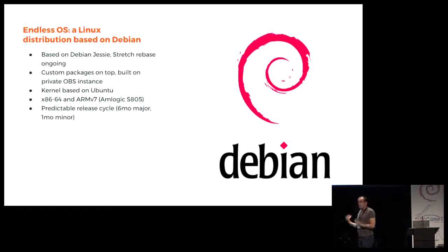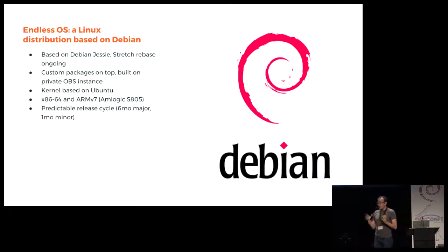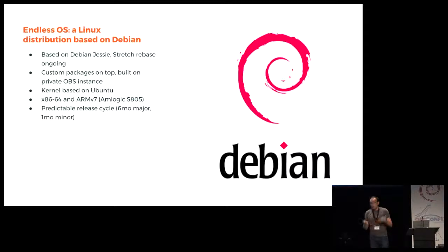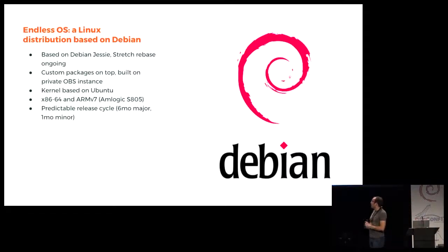The kernel right now is based on Ubuntu — a decision made a while ago that's kind of hard to change. Ubuntu also has a lot more support for more kinds of hardware. We are available right now for x86-64 and also for ARMv7, because one of our hardware devices is based on AMLogic S805.